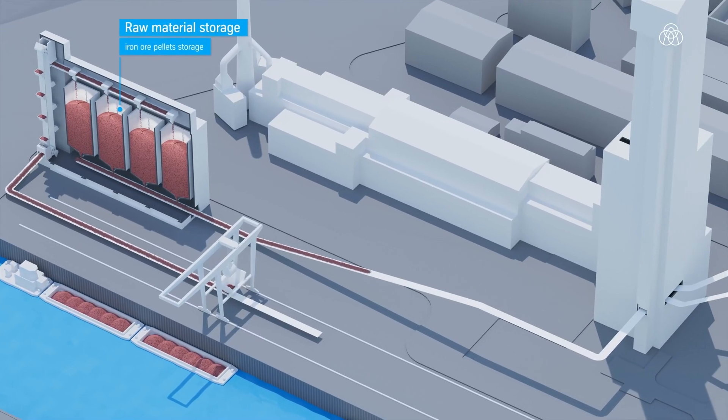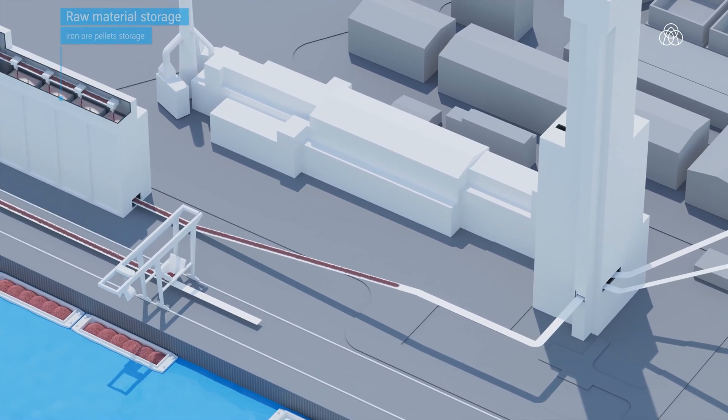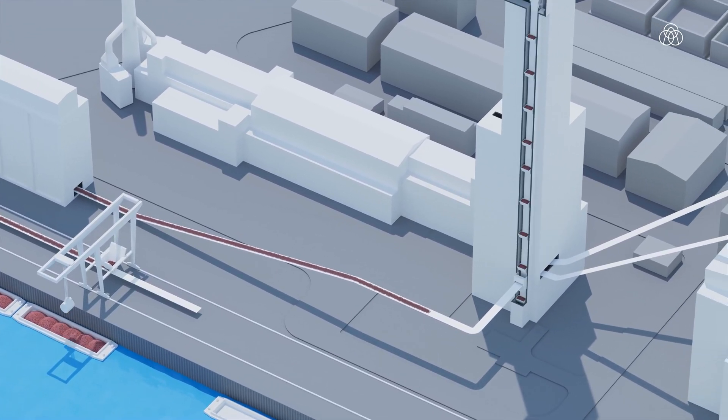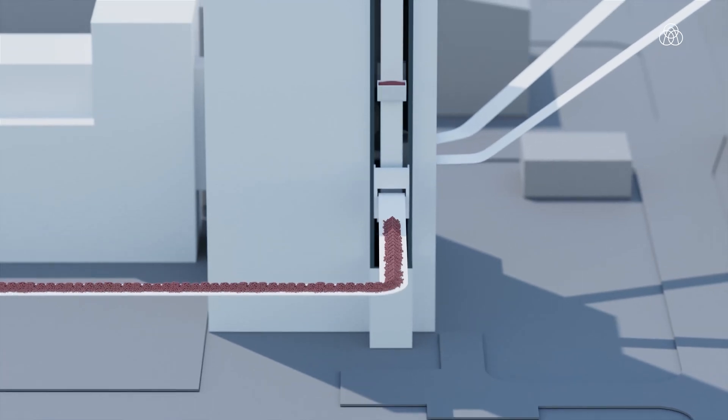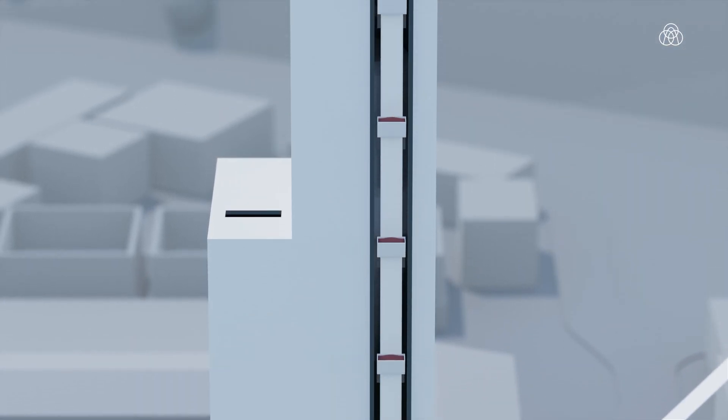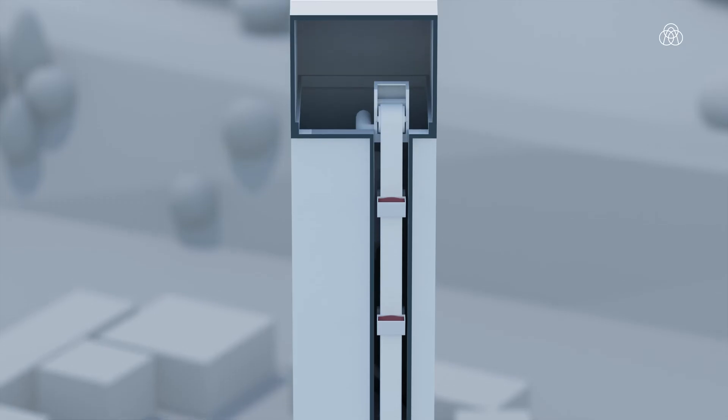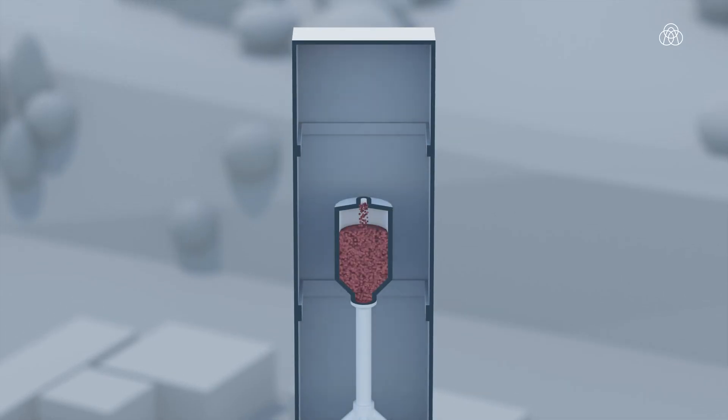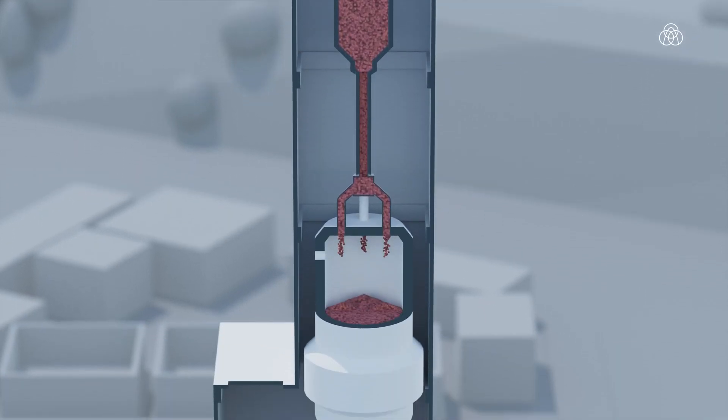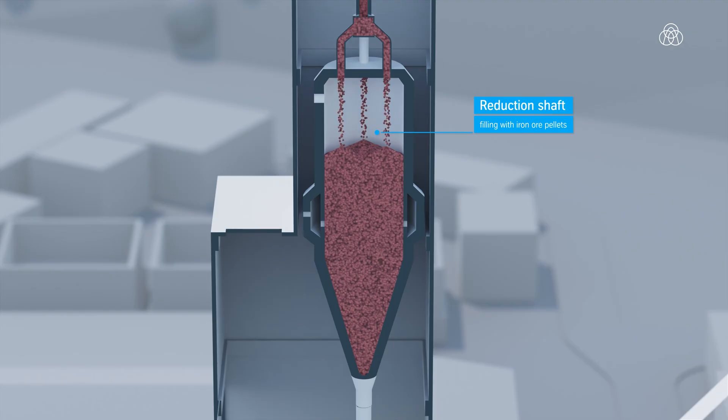The pellets and lump ore are fed into the direct reduction tower via conveyor systems. By continuously adding pellets into the reduction shaft, a continuous column of material is formed.